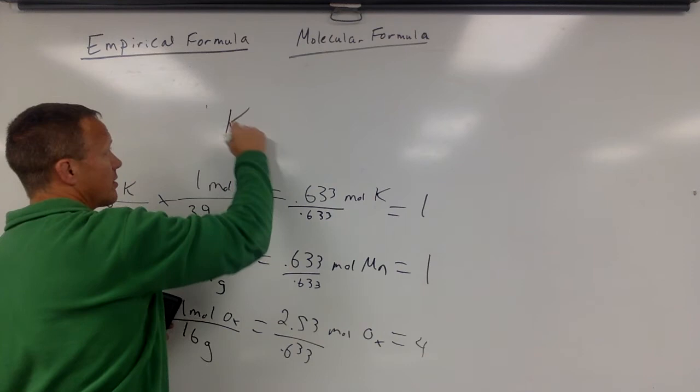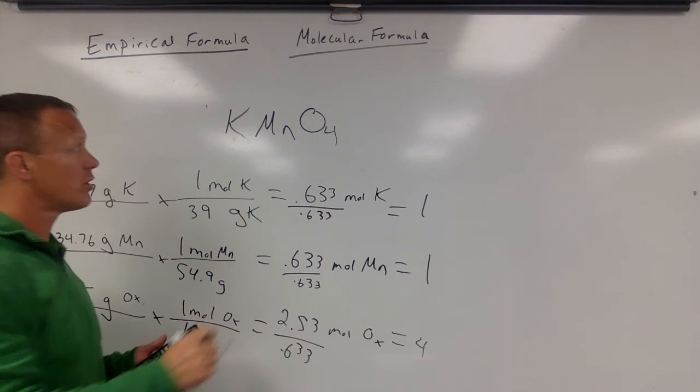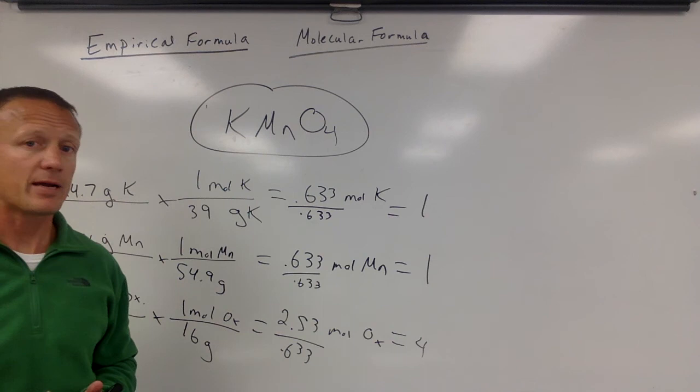So it's a 1:1:4 ratio. So our formula would be K1. In other words, for every one atom of potassium, there's one atom of manganese or one mole of manganese, and there's four moles of oxygen. So KMnO4 is our formula. That is the empirical, it might also be the molecular. We don't know that quite yet.